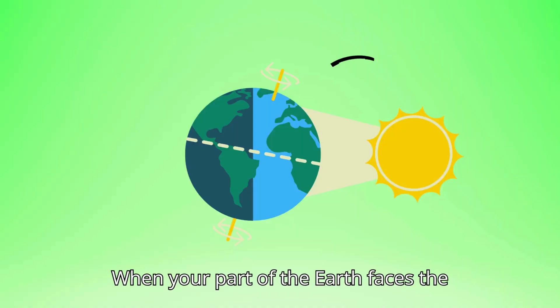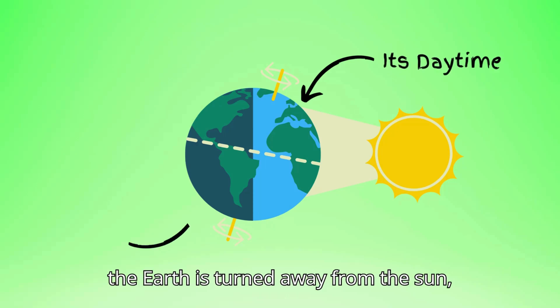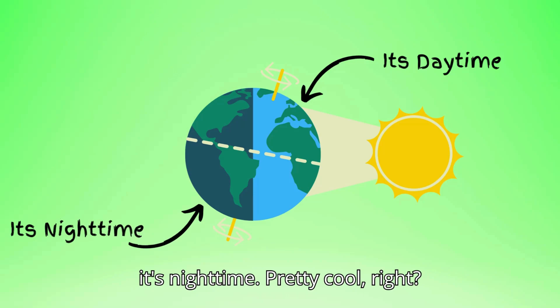When your part of the Earth faces the sun, it's daytime. And when your part of the Earth is turned away from the sun, it's nighttime. Pretty cool, right?